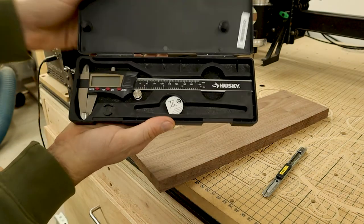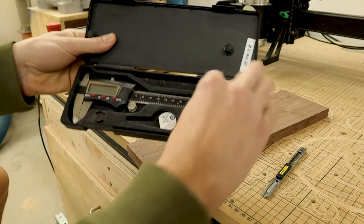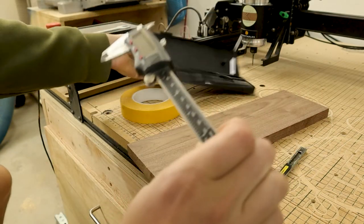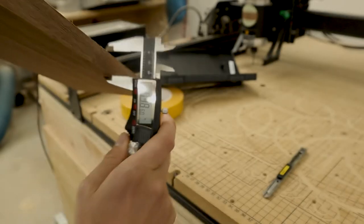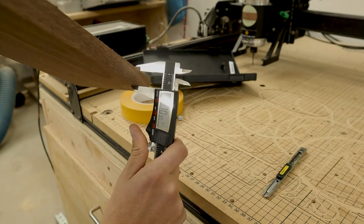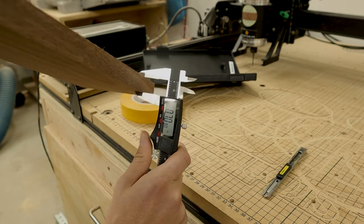Today we're going to install some bow ties into a coffee table. I'm going to cut out my bow ties on my CNC, so first I need to get the thickness of the walnut and I'll use my calipers for that.